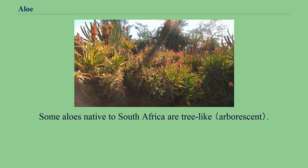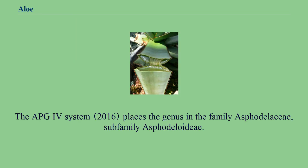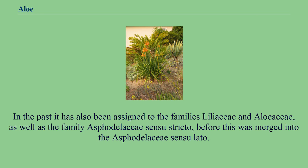Some aloes native to South Africa are tree-like. The APG4 system places the genus in the family Asphodelaceae, subfamily Asphodeloideae. In the past it has also been assigned to the families Liliaceae and Aloiaceae, as well as the family Asphodelaceae sensu stricto, before this was merged into the Asphodelaceae sensu lato.